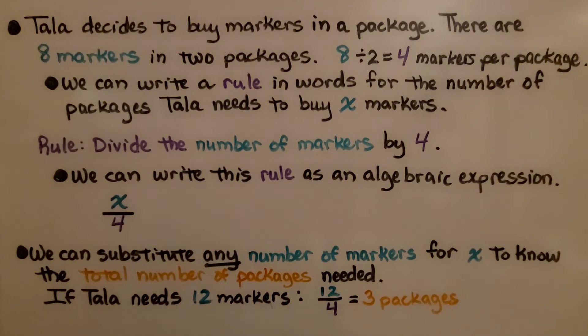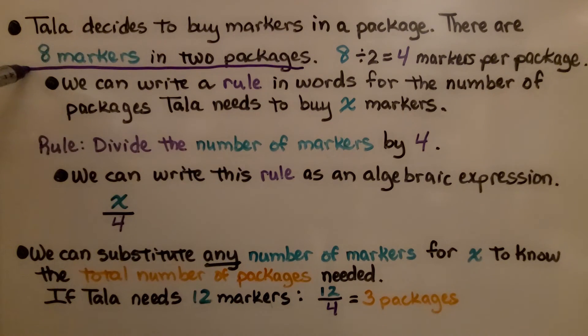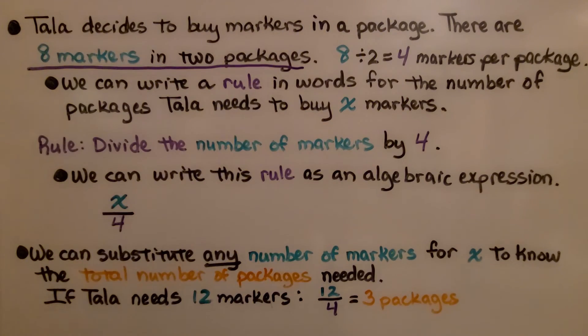Okay, let's try this one. Tala decides to buy markers in a package. There are 8 markers in 2 packages. 8 divided by 2 tells us there's 4 markers per package.